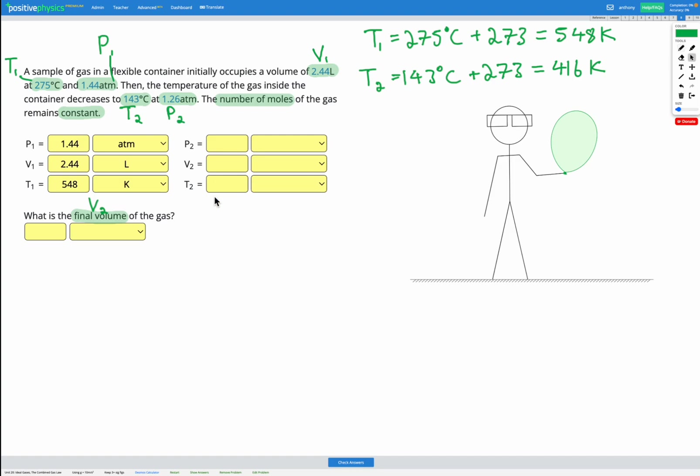So we can fill that in now for our T2. It's 416 Kelvin. And our final pressure is 1.26 atm.